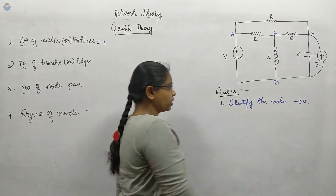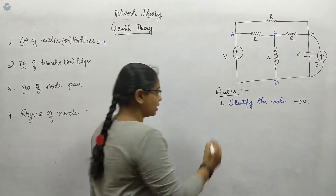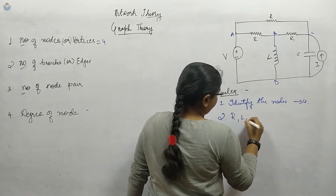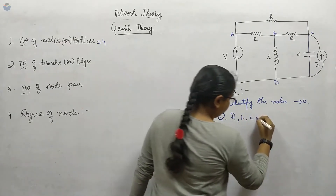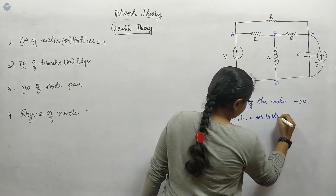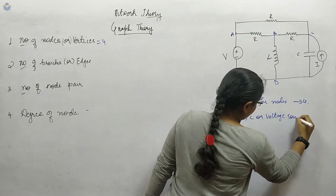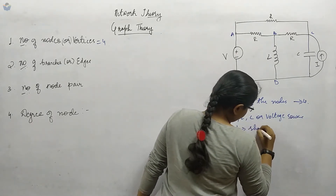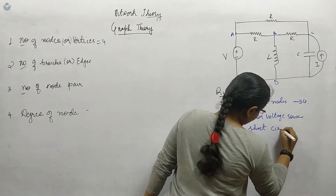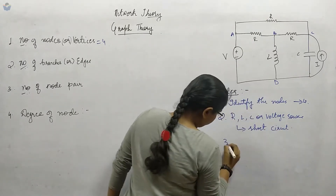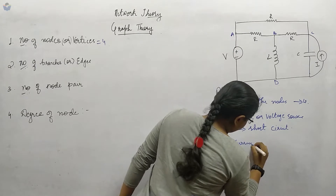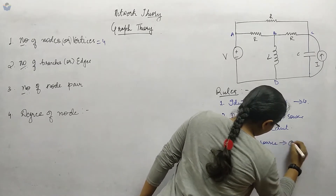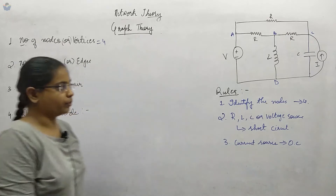The first rule is to identify the nodes. The second rule is: whether it is R, L, C, or a voltage source, you have to short-circuit them. The third rule is: if you have a current source, make it an open circuit.